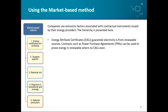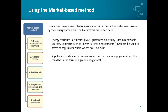Using the market-based approach, let's look in more detail at the emissions hierarchy. At the top of the hierarchy we have energy attribute certificates and energy contracts such as power purchase agreements — both can be used to demonstrate your scope 2 emissions, and we'll go into more detail on these in the following slides. Next in the hierarchy is supplier-specific emissions factors — where suppliers provide differentiated products such as green tariffs, they should have a specific emissions factor associated with it.